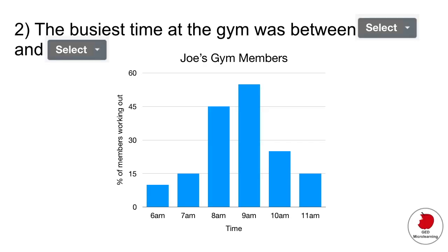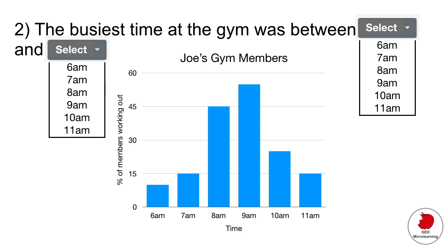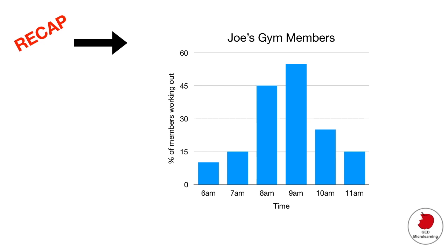This next question is a drop-down menu question. So you can see you have these drop-down menus. When you click on them they give you a series of options and they're asking you to interpret some data from this bar graph. So let's quickly remind ourselves of the four steps of what you want to do when you look at a graph. First thing you want to look at the title. This tells you what the data is about.